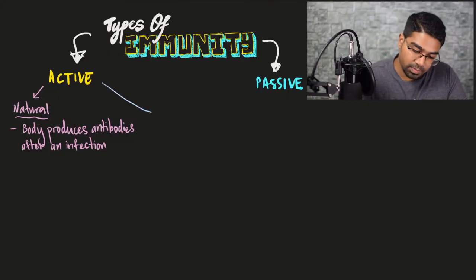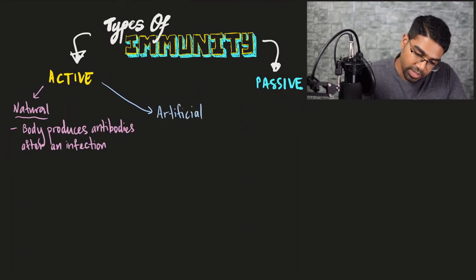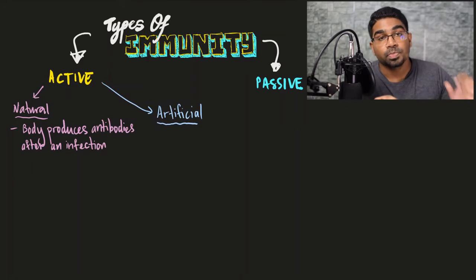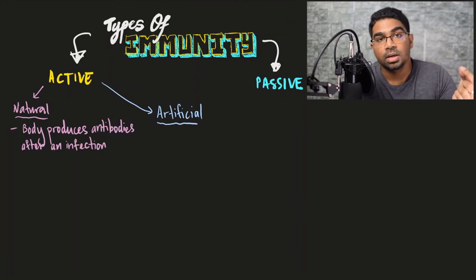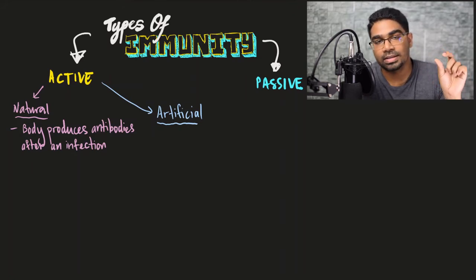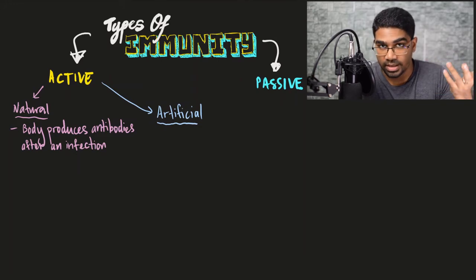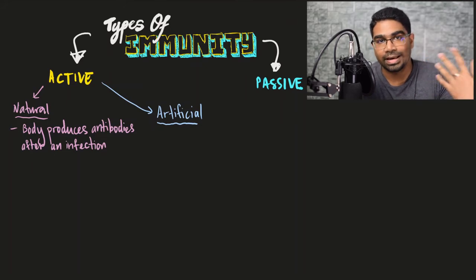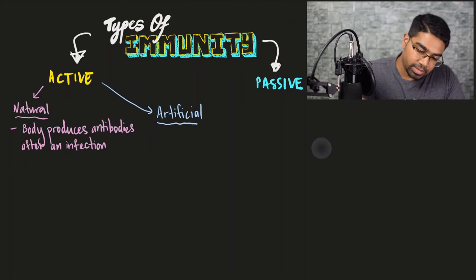Artificial active immunity is still a type of active immunity, so our body still produces the antibodies. An example is vaccination. Vaccines contain either dead or non-virulent microorganisms that cause the disease we want antibodies against, or fragments of proteins that act as antigens. These are introduced into our body so that white blood cells recognize them as antigens and produce antibodies against them.